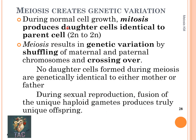The results of meiosis are that they create genetic variability. Mitosis produces daughter cells identical to the parent, while meiosis results in genetic variation by shuffling of maternal and paternal chromosomes and crossing over. No daughter cell formed during meiosis is genetically identical to either the mother or the father. During sexual reproduction, fusion of unique haploid gametes produces truly unique offspring.